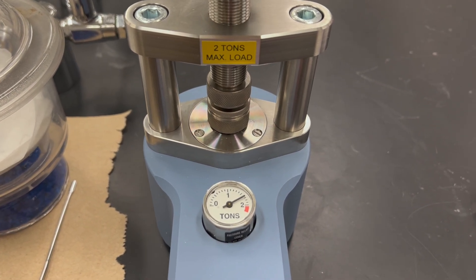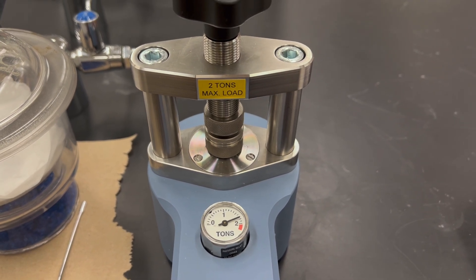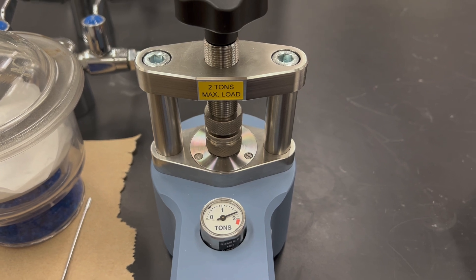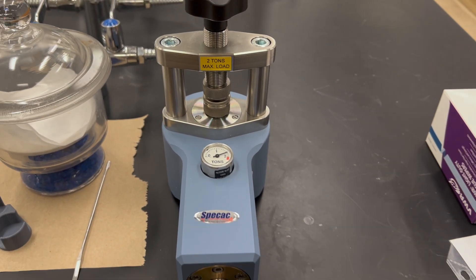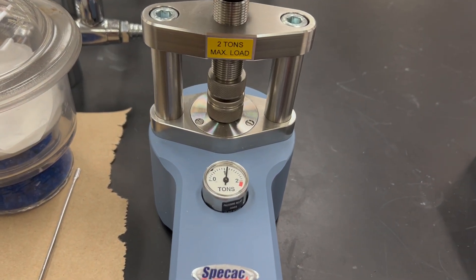You want to go until it reads about 1.7, 1.8 tons. Don't go over two tons; that could break the whole thing. But you go to about 1.8 and then you just let it sit there, and this is actually melting the KBR. Let it sit for about 10 seconds or so.